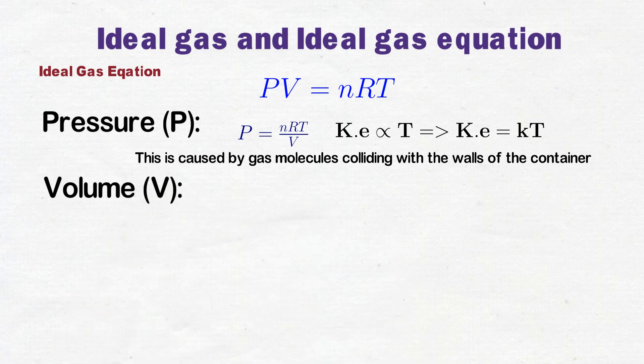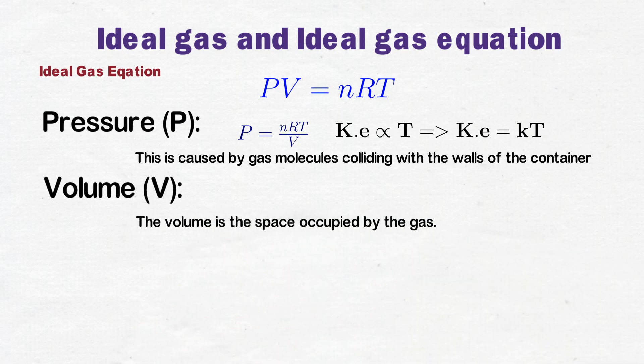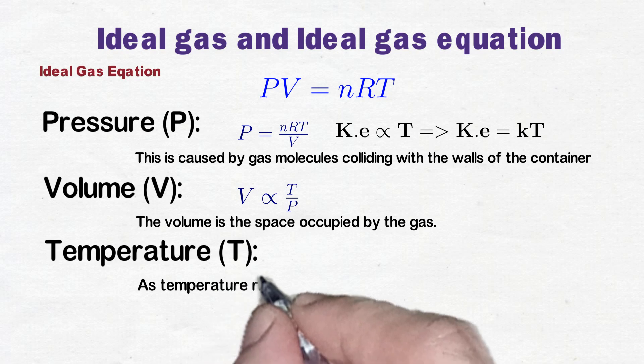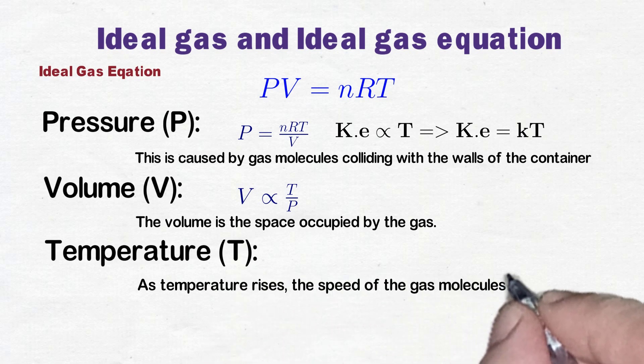Number two, volume: the volume is the space occupied by the gas. According to the law, as the temperature increases with constant pressure, the volume expands. And as the pressure increases with constant temperature, the volume decreases. Number three, temperature: temperature is measured in Kelvin. Temperature is directly proportional to the average kinetic energy of gas molecules. As temperature rises, the speed of gas molecules increases.